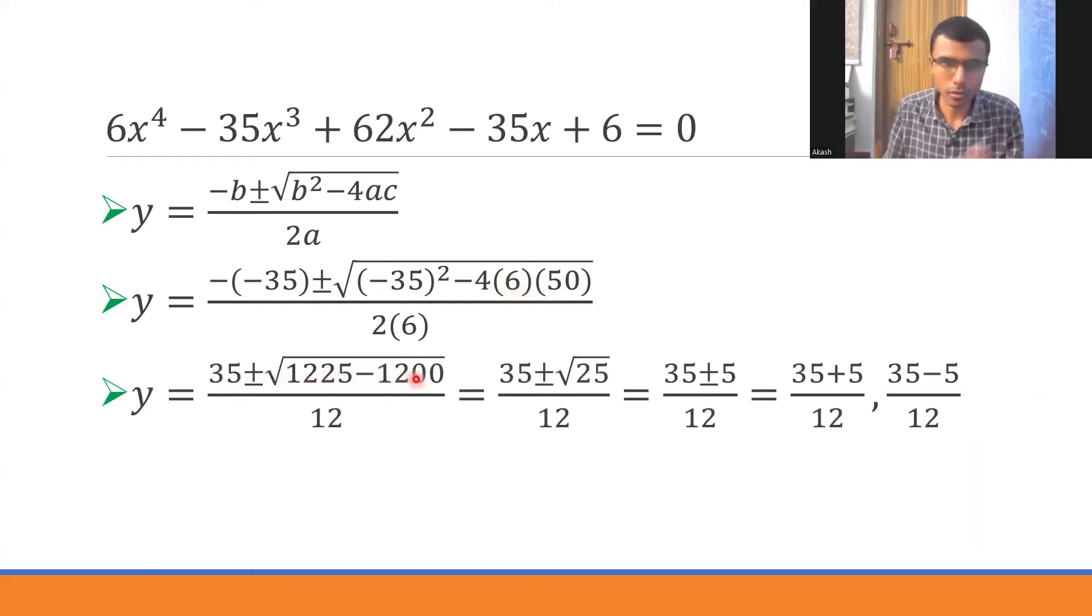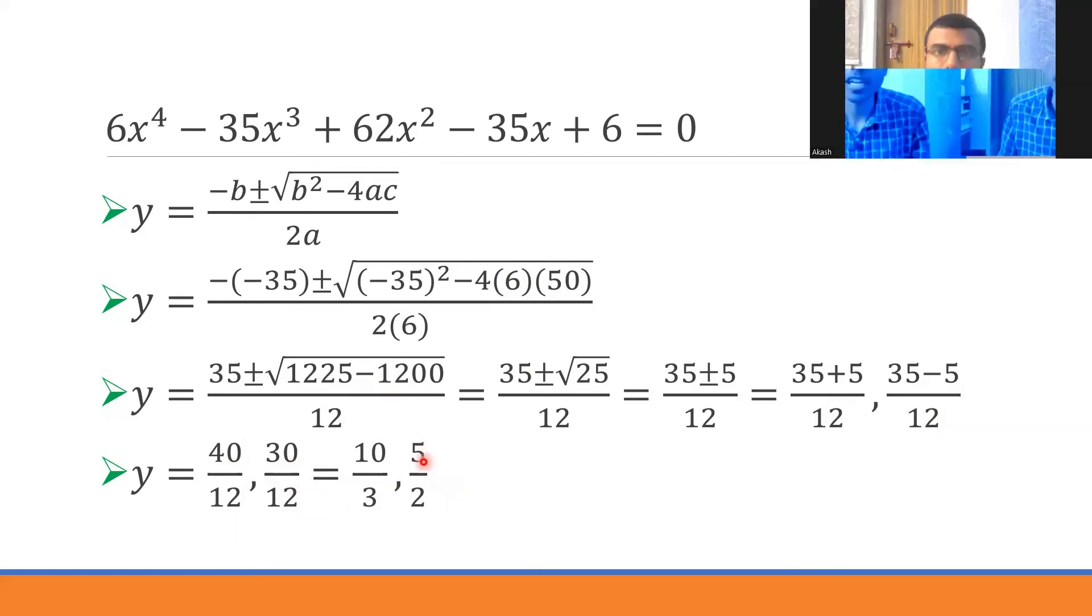1,225 - 1,200 = 25, and √25 = 5. This is (35 ± 5)/12. 35 + 5 = 40, 40/12 = 10/3. 35 - 5 = 30, 30/12 = 5/2. So y = 10/3 or 5/2. Now remember we took x + 1/x as y.